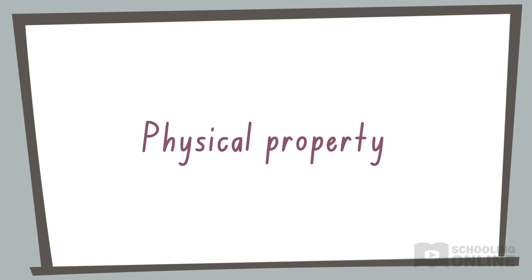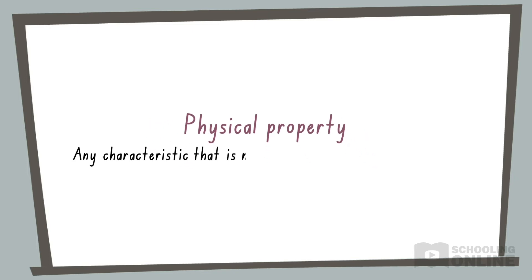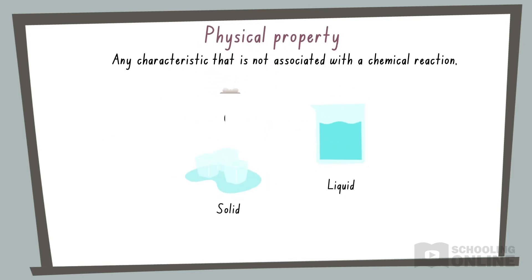A physical property is any characteristic that is not associated with a chemical reaction. For example, whether a substance is a solid, liquid or gas at room temperature is a physical property, because a change in physical state does not involve chemical reactions.